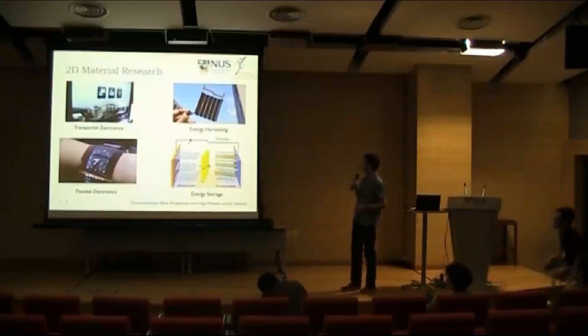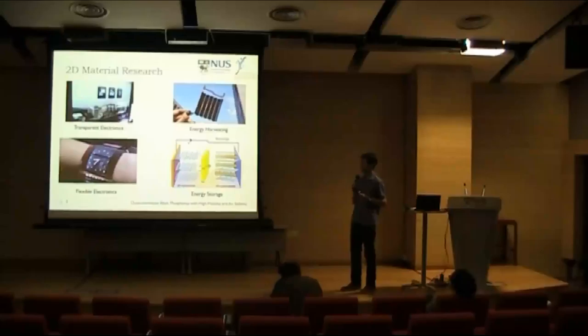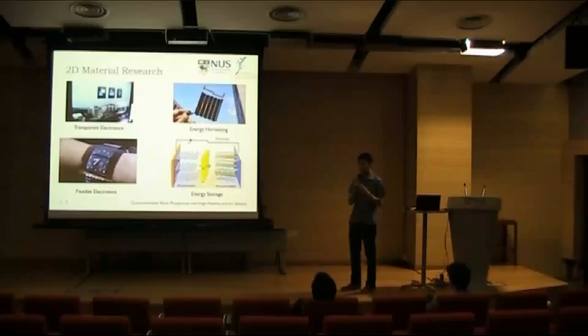And on the top left, we can see that because these materials are atomically thin, they actually are more transparent, so they can be used in transparent electronics. And also they have a high strain tolerance, so they can be used in flexible electronics as well, as we have seen in some curved televisions.